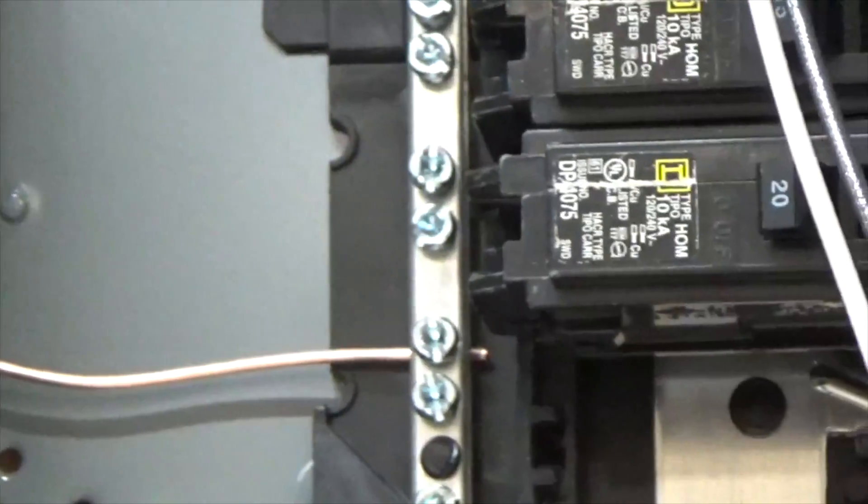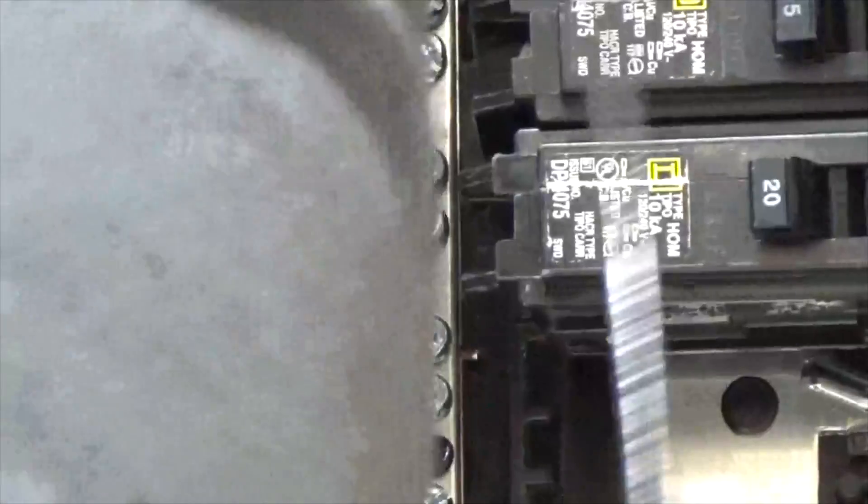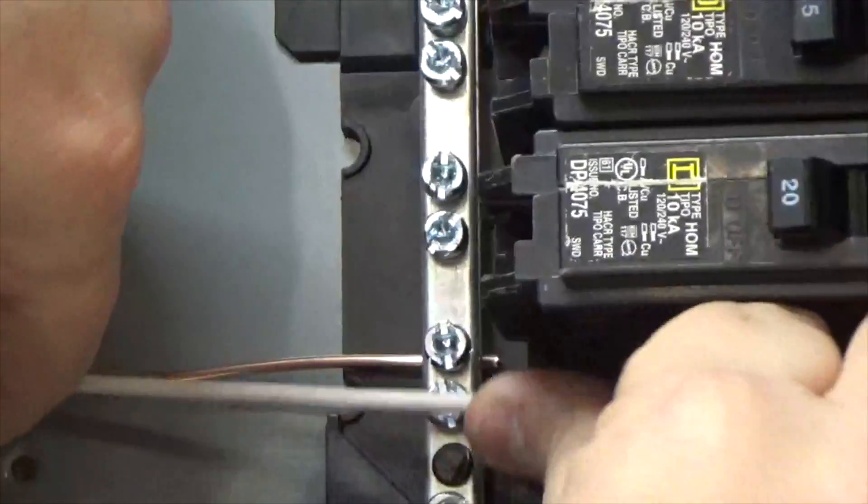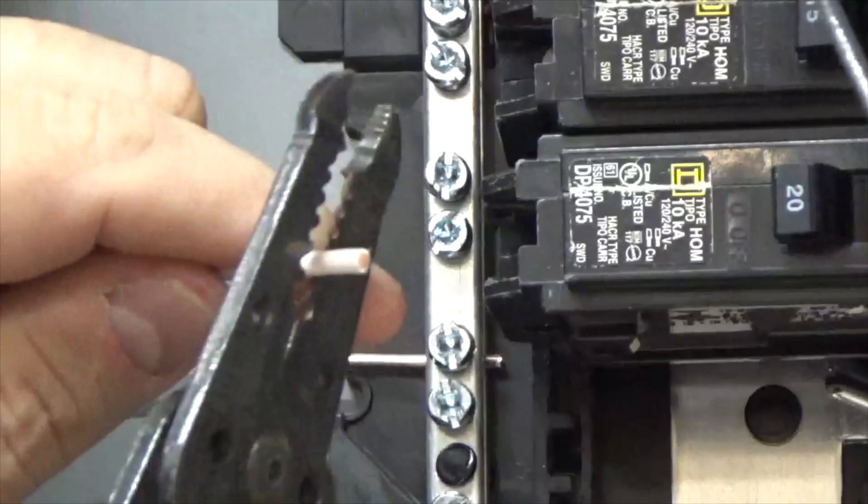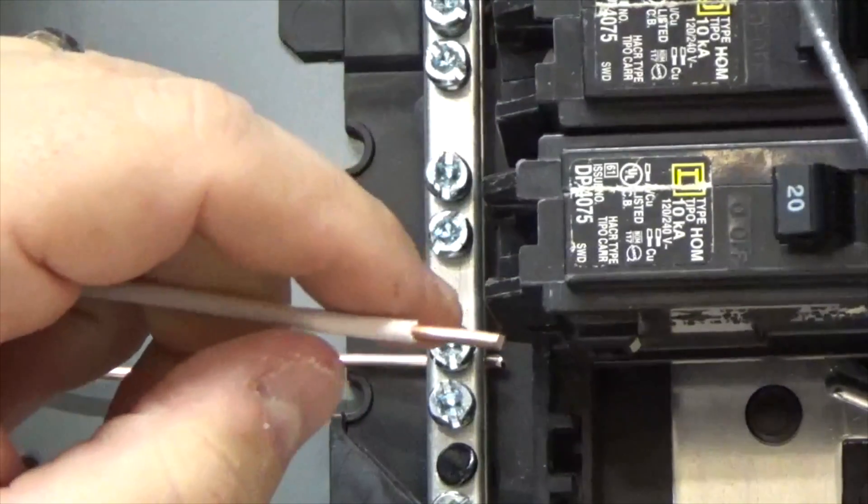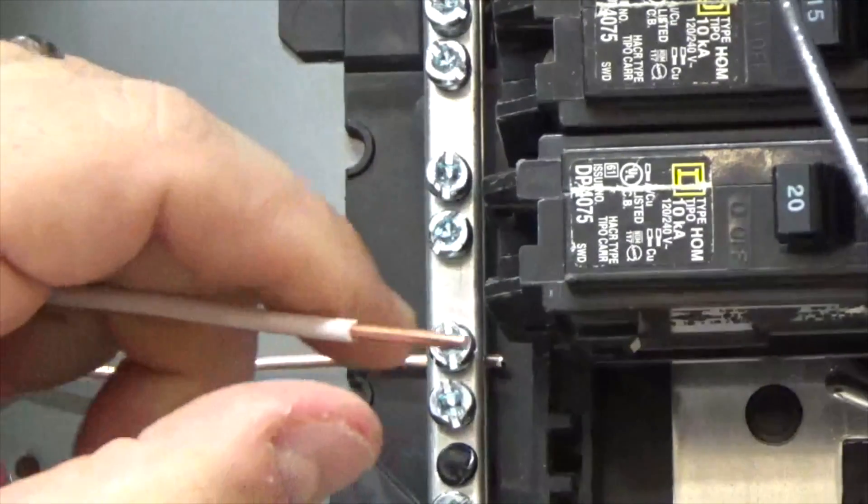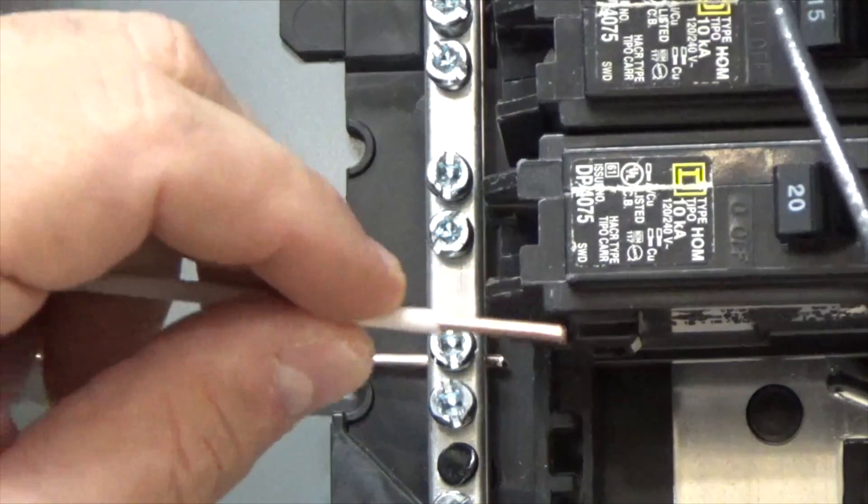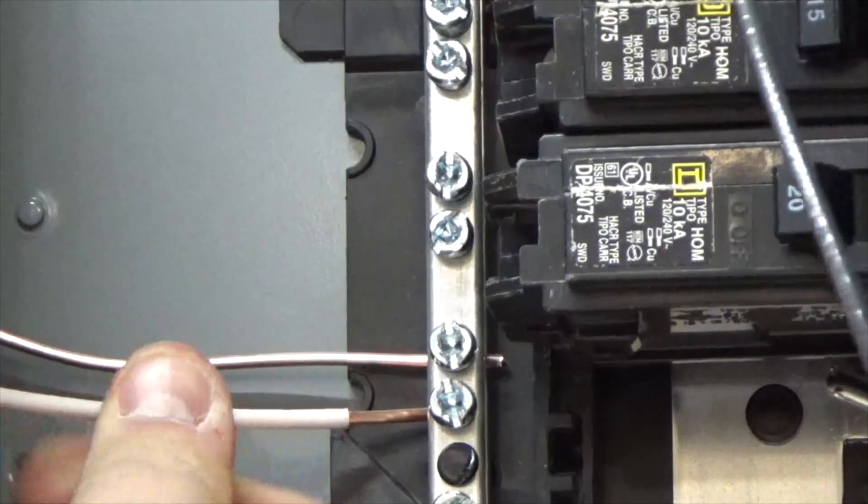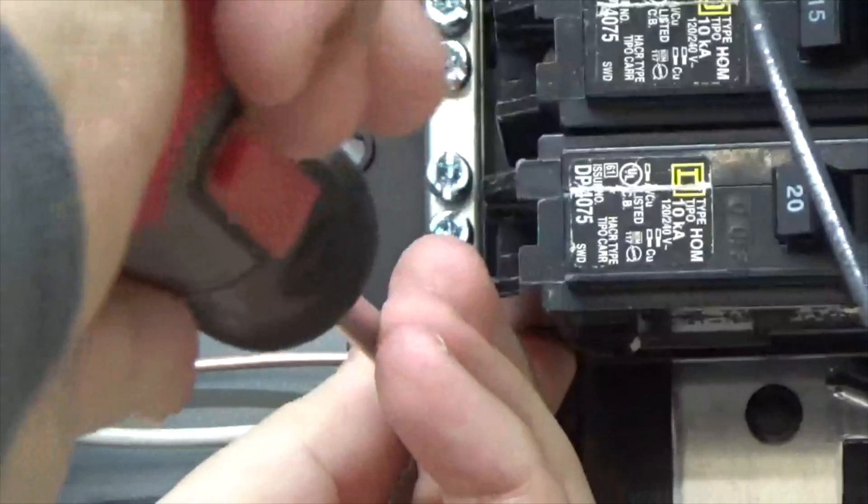I'm going to do the same thing with the neutral. I'm going to strip my conductor about five-eighths of an inch and I'm going to slide it in underneath the ground. And I'm going to make that tight.